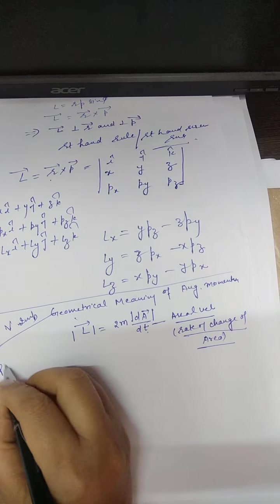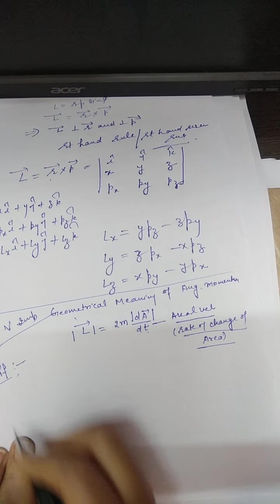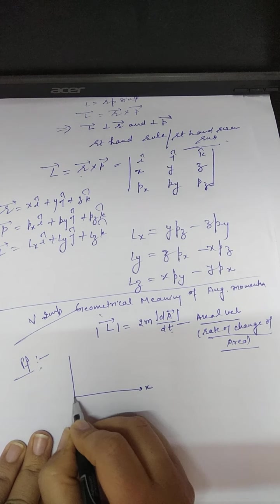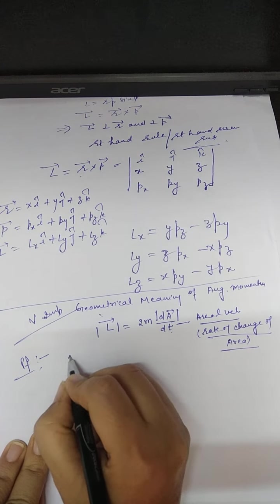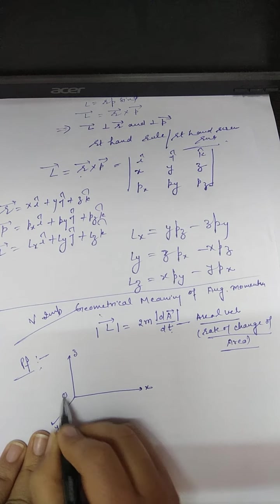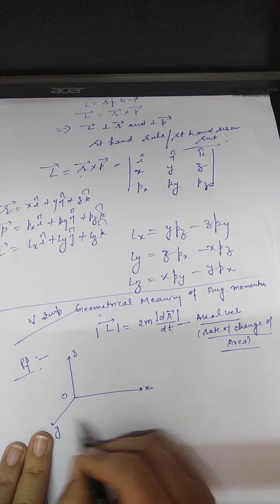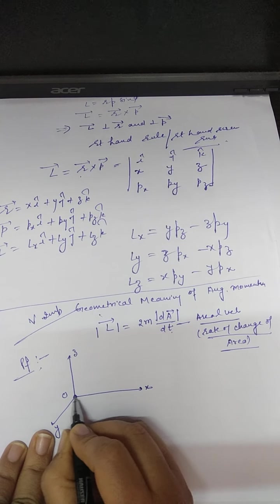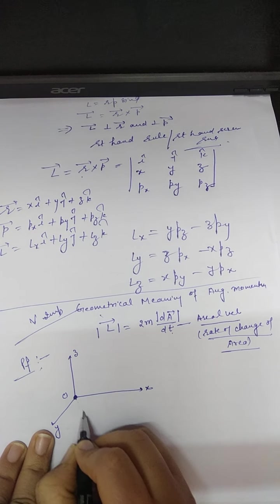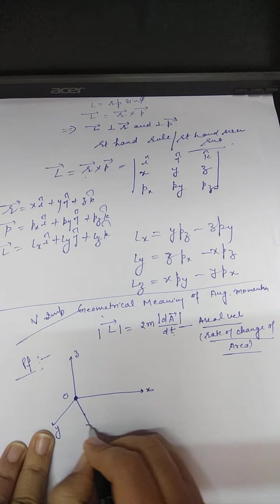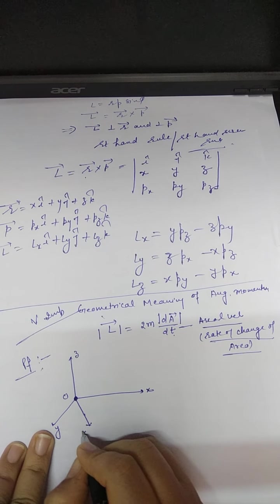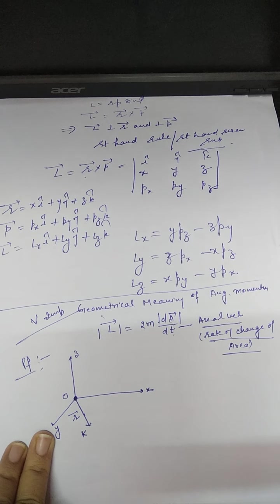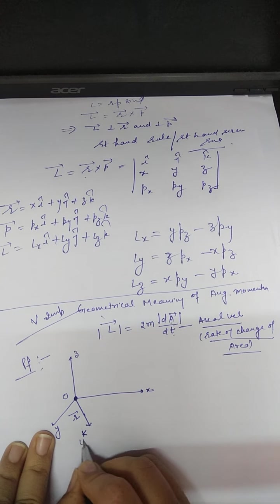To prove this, let us suppose there is a coordinate system with x-axis, y-axis, and z-axis. A particle is moving in the x-y plane about the z-axis. At any instant, the particle is at point K, and its position vector is r at time t.